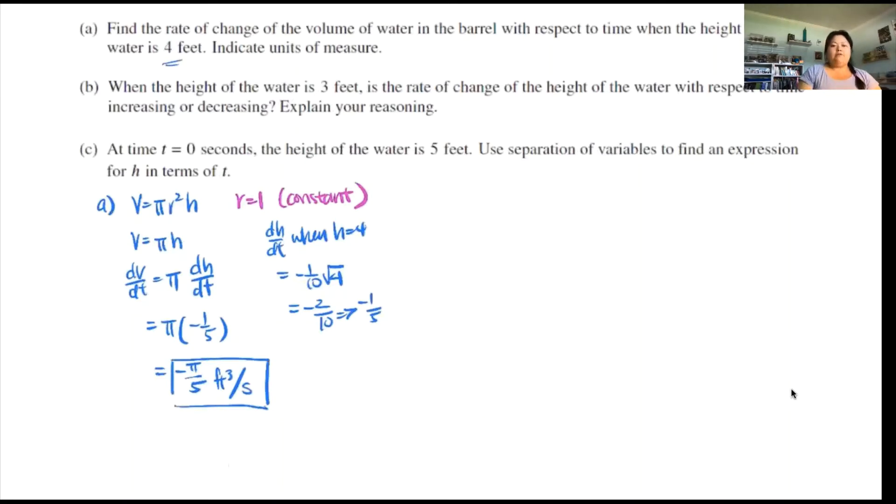Part B: When the height of the water is 3 feet, is the rate of change of the height of the water with respect to time increasing or decreasing? Explain your reasoning. When we're looking for increasing or decreasing, that's the derivative of what we're looking at. We're looking at the rate of change of height, dh/dt. That means we're taking the prime of that, so we're looking at d squared h over dt squared.